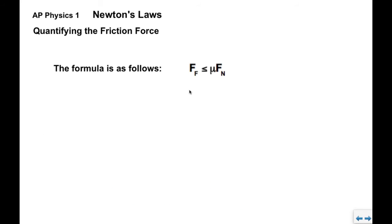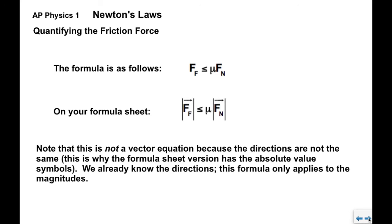Now the formula is as follows. The magnitude of the friction force is less than or equal to mu times FN. So on your formula sheet, it looks this way. You've got absolute value symbols and vector symbols. The reason they're using absolute value is because this is not a vector equation. We know that the directions are not the same. We know that the direction of FN is perpendicular to the surface and outward, and the direction of FF is opposing the motion parallel to the surface. So the formula only applies to the magnitudes of the forces.